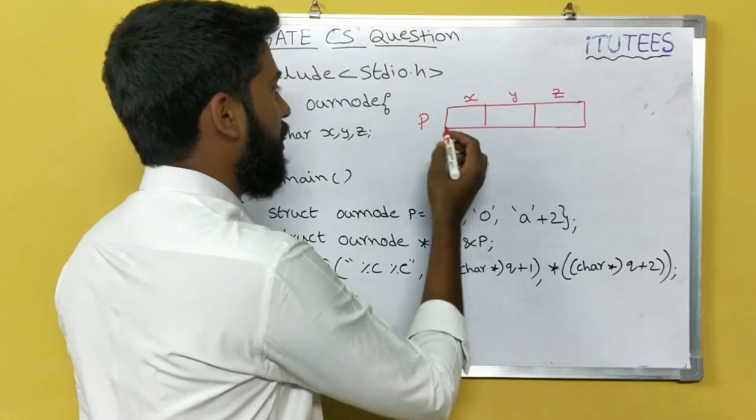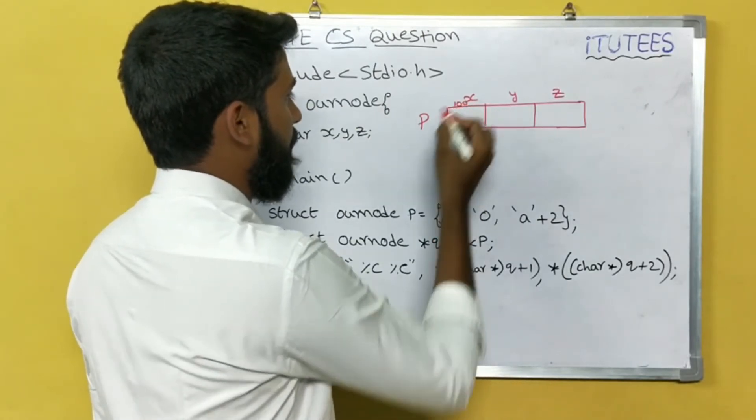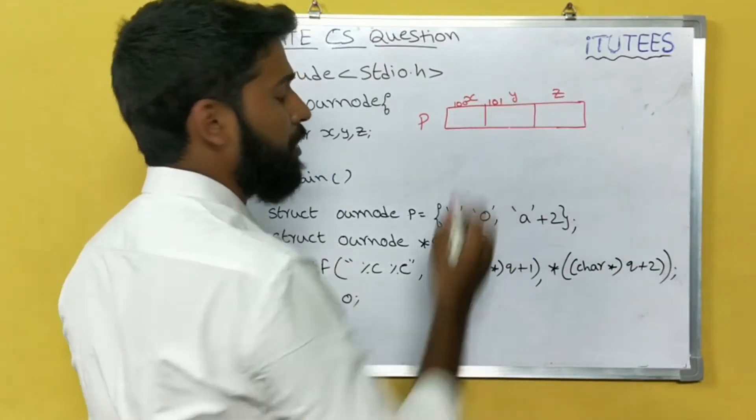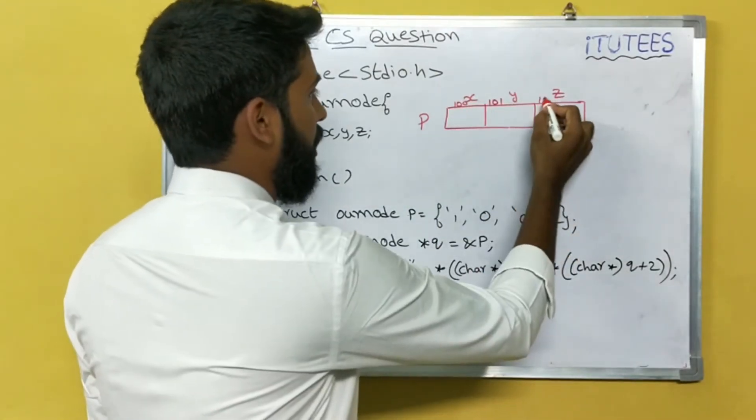So let us assume the address is 100. Character occupies 1 byte, so next address is 101, the next address is 102.